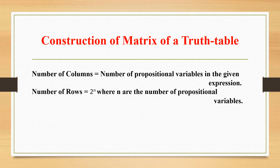Now let us see how to determine the columns and rows of a matrix. The number of columns of the matrix of a truth table is equal to the number of propositional variables in the given expression. And the number of rows is equal to 2 raised to n, where n is the number of propositional variables.